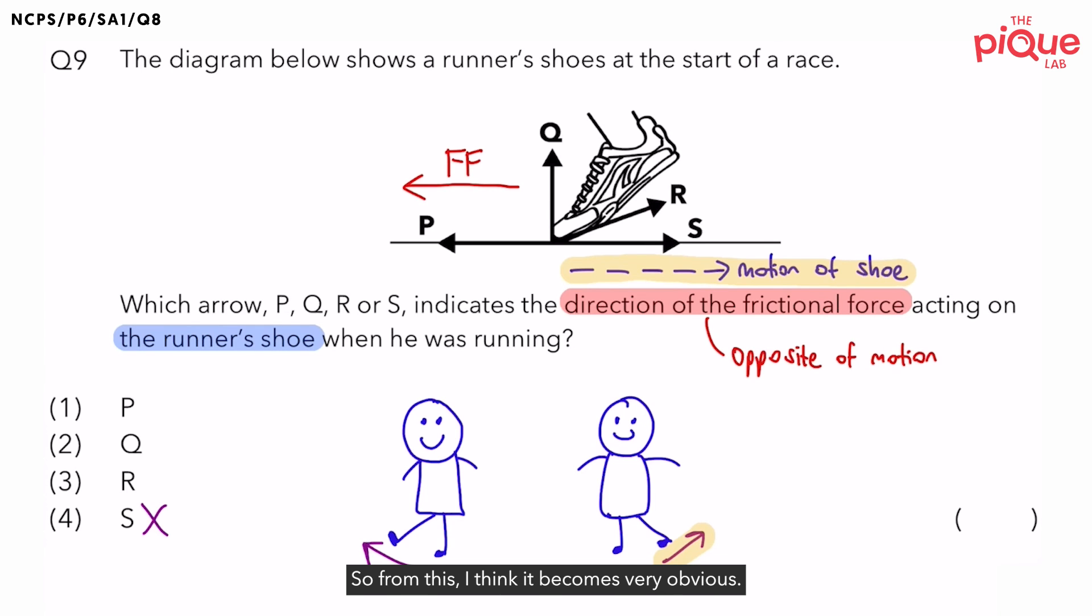So, from this, I think it becomes very obvious. Which arrow shows you the direction of frictional force? Is it P, Q, R or S? Answer should be P. Therefore, the correct answer shouldn't be S. It should be option 1.